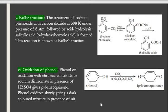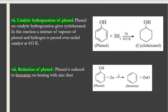Oxidation of phenol: phenol on oxidation with chromic anhydride or sodium dichromate in the presence of sulfuric acid gives para-benzoquinone. Phenol also oxidizes slowly giving a dark-colored mixture in the presence of air. Catalytic hydrogenation of phenol means saturating the double bonds in the benzene ring by addition of hydrogen molecules in presence of nickel catalyst at 433 Kelvin; three molecules of hydrogen are added to the benzene ring, giving cyclohexanol.